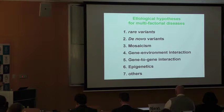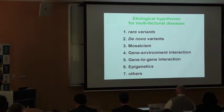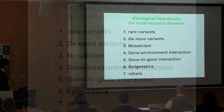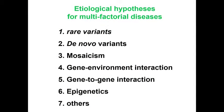Many etiological hypotheses for multifactorial disease have been provided so far: rare variants contributing to disease onset, genetic mosaicism, gene-environment interaction, gene-to-gene interaction, epigenetics, and perhaps many others. These hypotheses need to be tested.